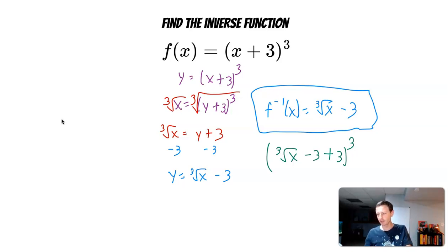Because what you're actually doing is you are taking the composition of the inverse and the function. So minus 3 plus 3 is 0. So then we have the cube root of x raised to the 3rd. Cube root of x raised to the 3rd is just x.